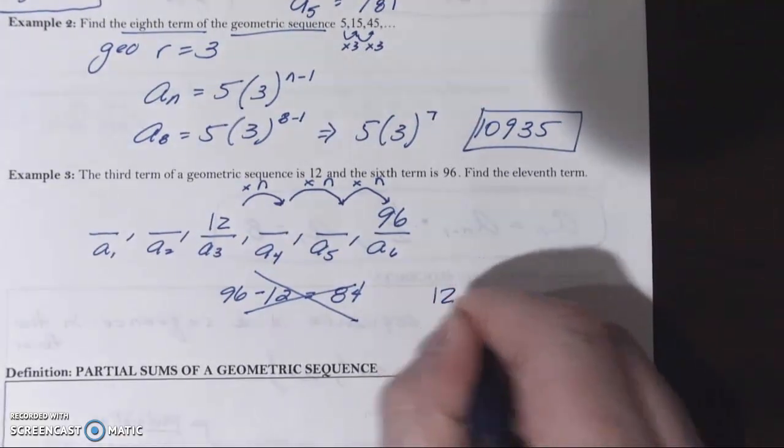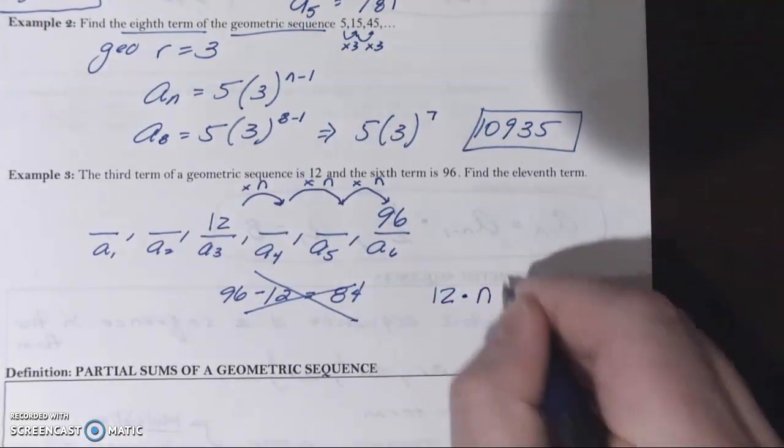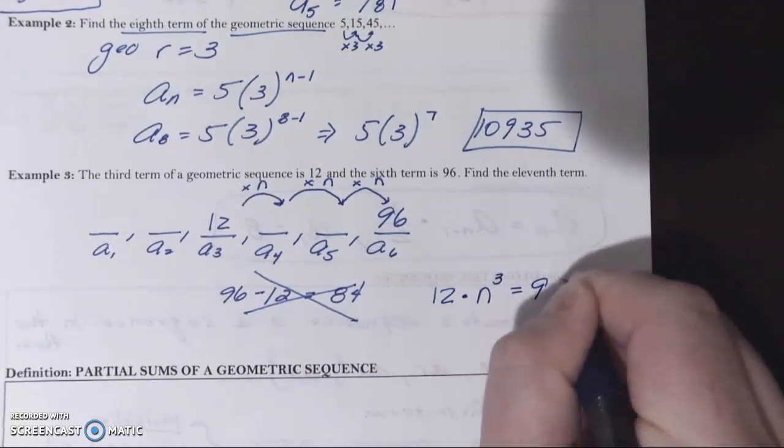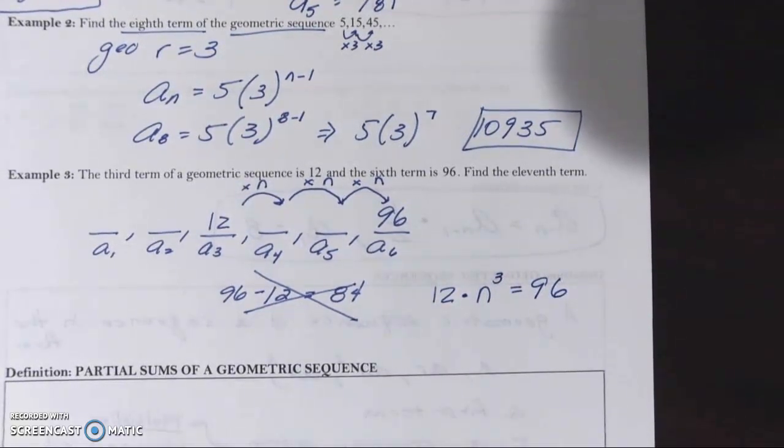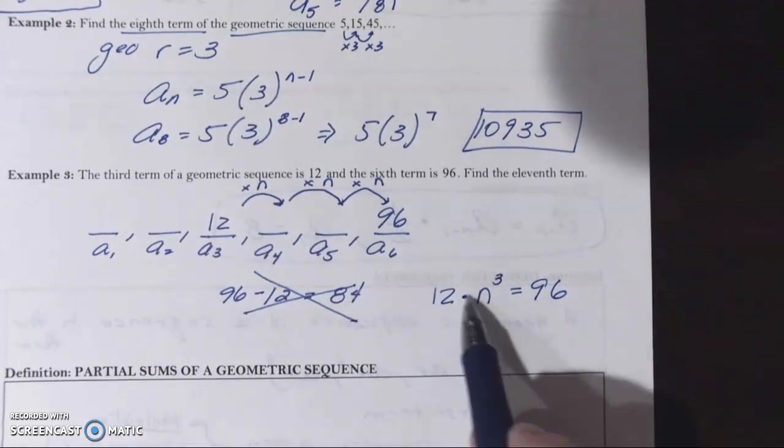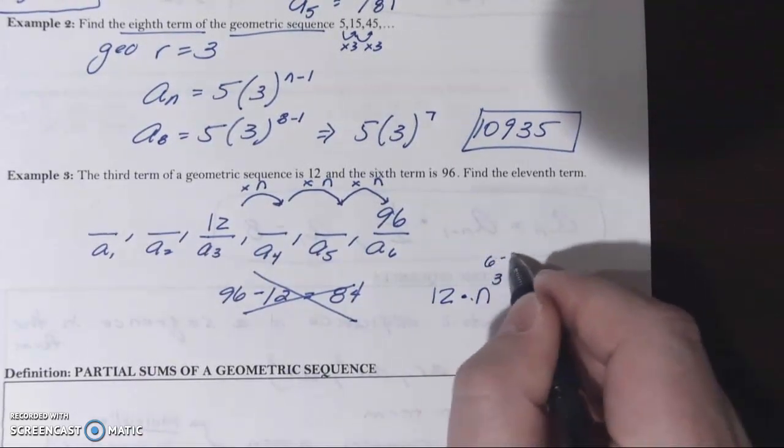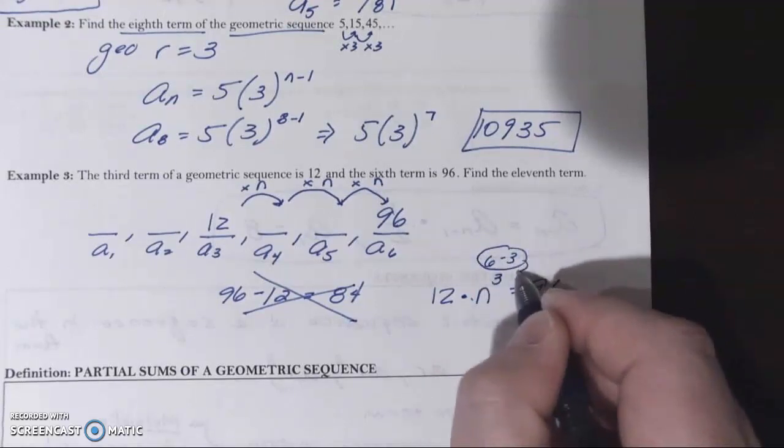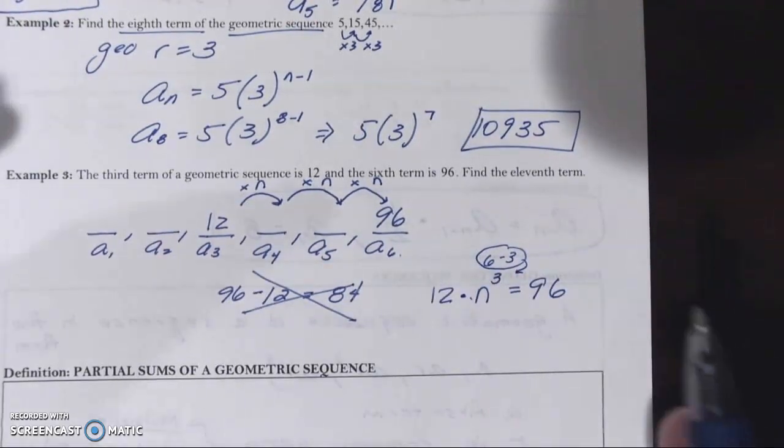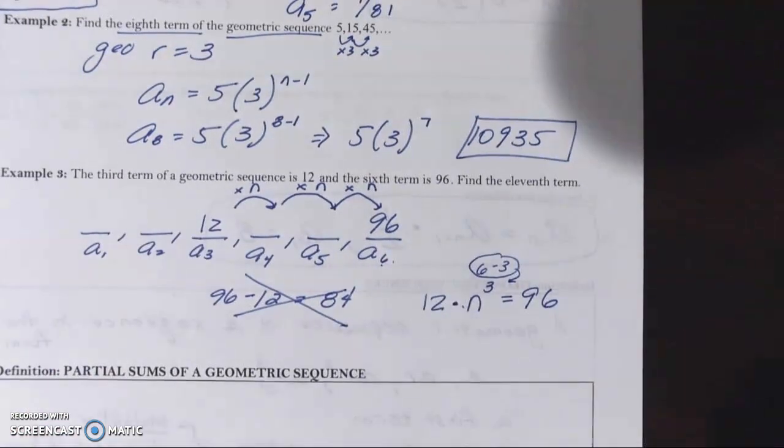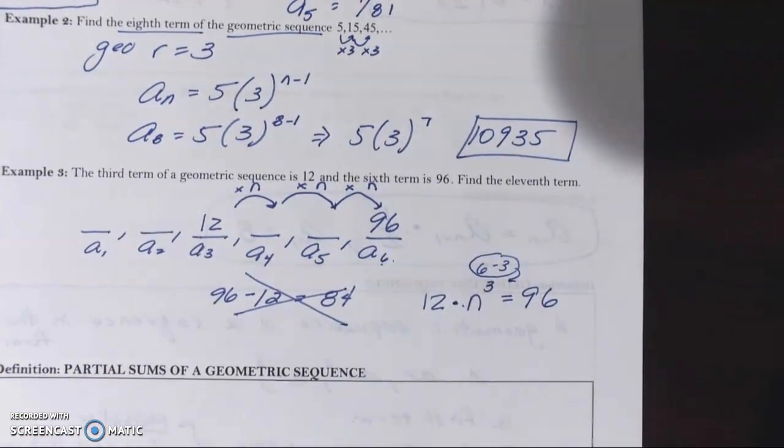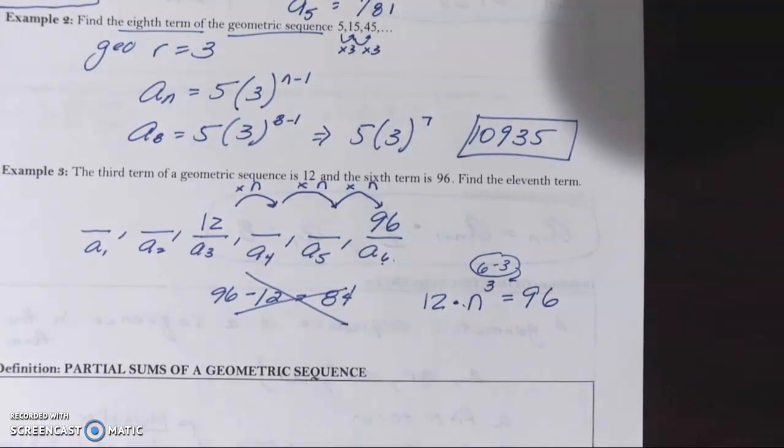Maybe you want to say 12 times n to the third is going to equal 96. Maybe that's how we want to think about it. Because we have 12. This happens to be 6 minus 3. Right. The sixth term. There's three terms between the sixth and the third term. So we're going to multiply three times. We're multiplying the same thing three times. That's the number to the third power.